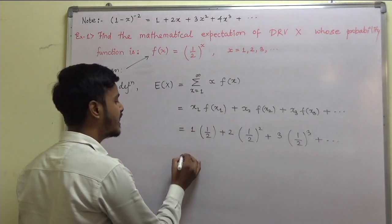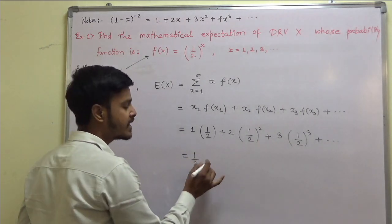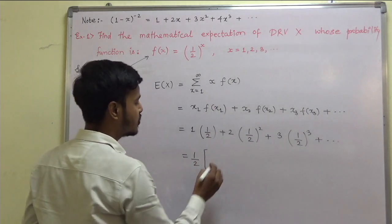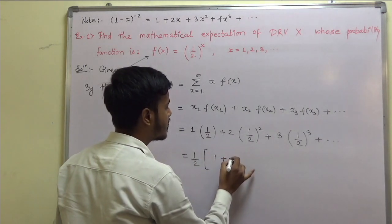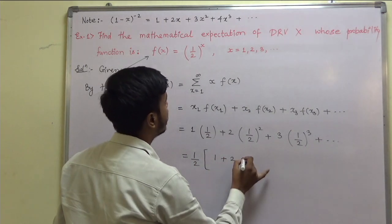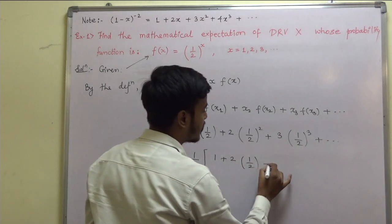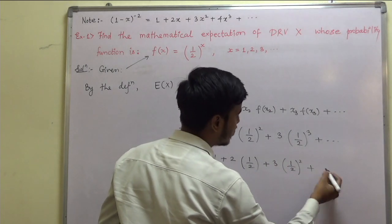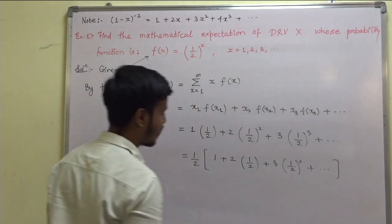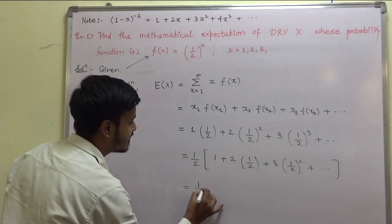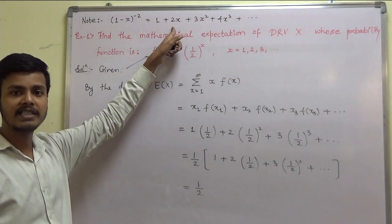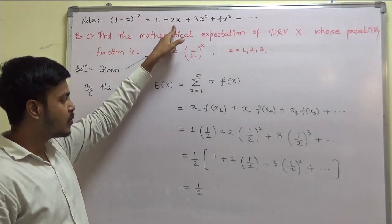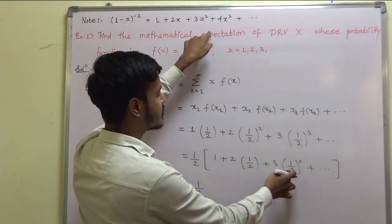What you can do is take 1 by 2 common from all the terms. As you can see, 1 by 2 is common from all the terms, so you remain with 1 plus 2 times 1 by 2, plus 3 times 1 by 2 squared, plus 4 times 1 by 2 cubed, and so on. We are going to make use of the binomial expansion result, which is 1 plus 2x plus 3x squared and so on.